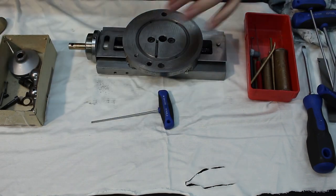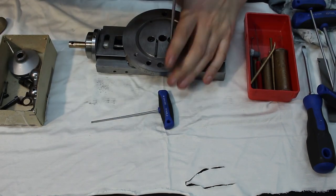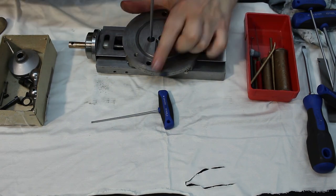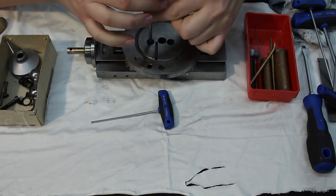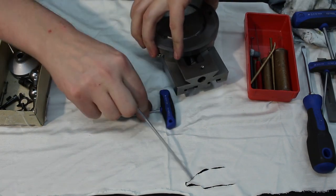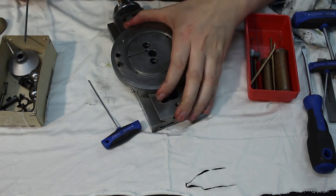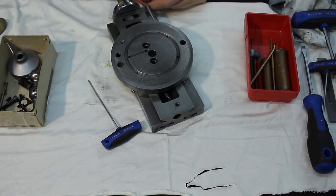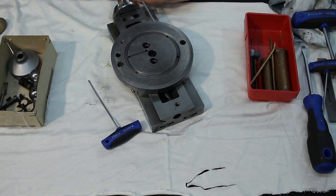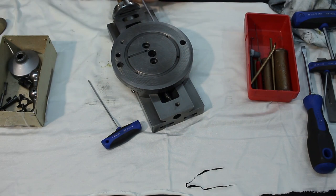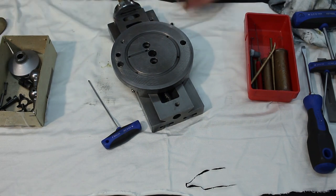I'm not sure yet how all this comes apart. These screws for sure hold the nut in place. Now we should be able to pull out the gib. And with the gib out of the way, we can take off the lower part of the compound here.